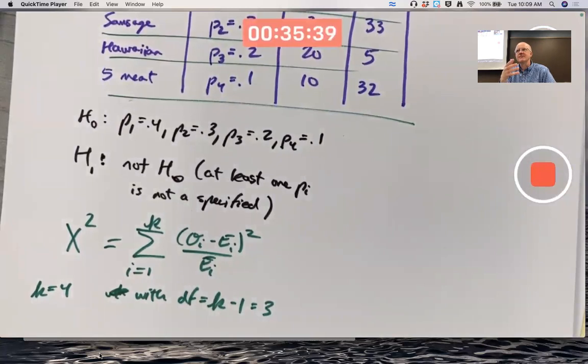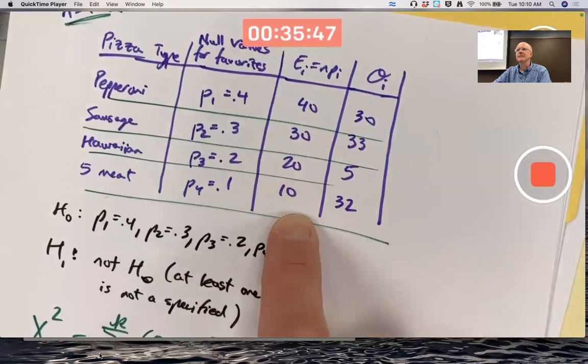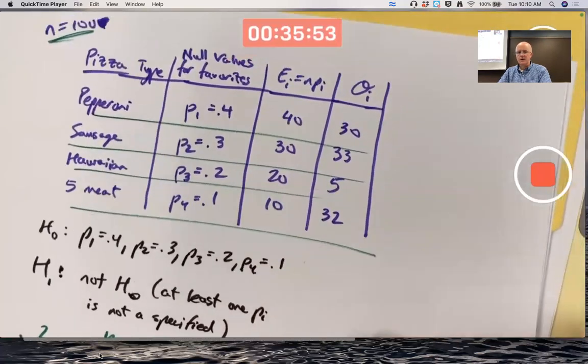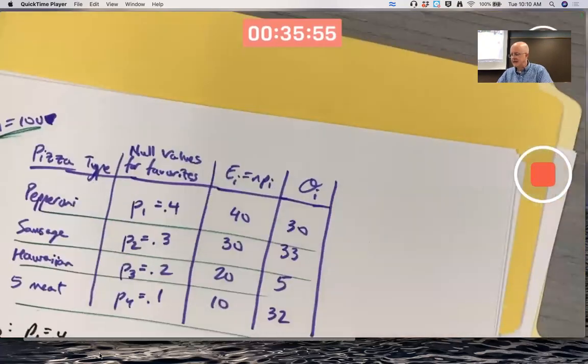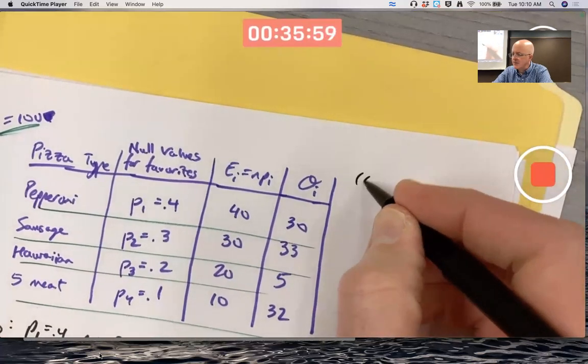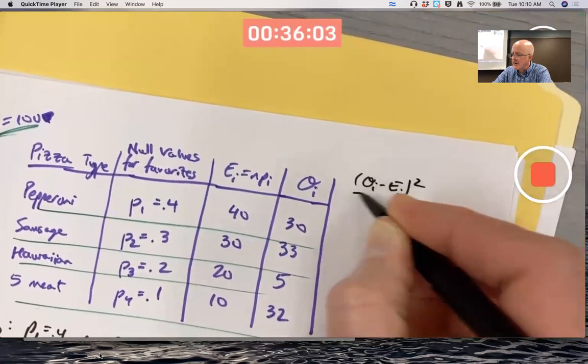So we got to compute - we could extend the table and compute - let's just go ahead and compute these fractions straight away here: Oi minus Ei squared divided by Ei. So here we've got 30 minus 40 squared divided by 40.